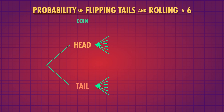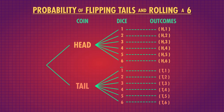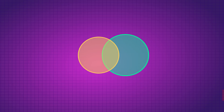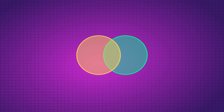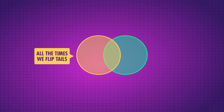There are 12 possible outcomes when flipping a coin and rolling a die. There are six outcomes with tails and two outcomes with a six. If we add all of those together we get eight, but looking through the chart, there are only seven possible outcomes that have either tails or a six. When we count tails and sixes independently, we double count the outcomes that have both. If we didn't subtract off the probability of tails and six, we would double count it. In a Venn diagram, if one circle is all the times we flip tails and the other circle is all the times we roll a six, the overlapping area is counted twice if we simply add the two circles together, which is why we need to subtract P of tails and six.